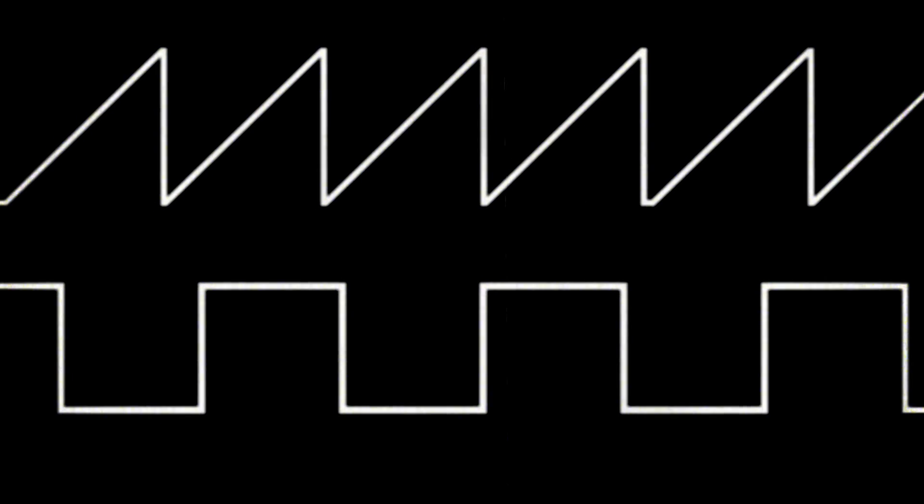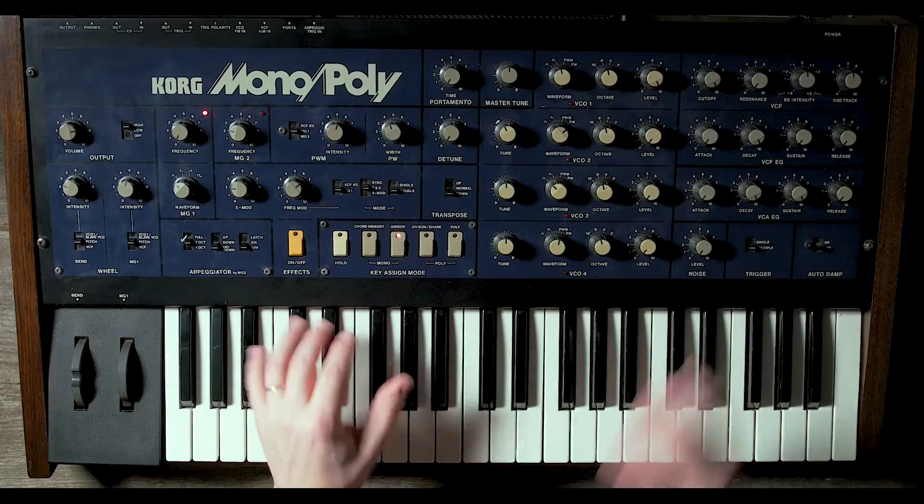Oscillators generate a variety of basic waveforms — literally the vibrations in the air that our ears pick up and perceive as sound. The shape of these basic waveforms is what gives it the characteristic that forms the foundation of your synthesized sound. So let's listen and take a look at a couple of basic waveforms and then later we'll figure out how to put it all together.